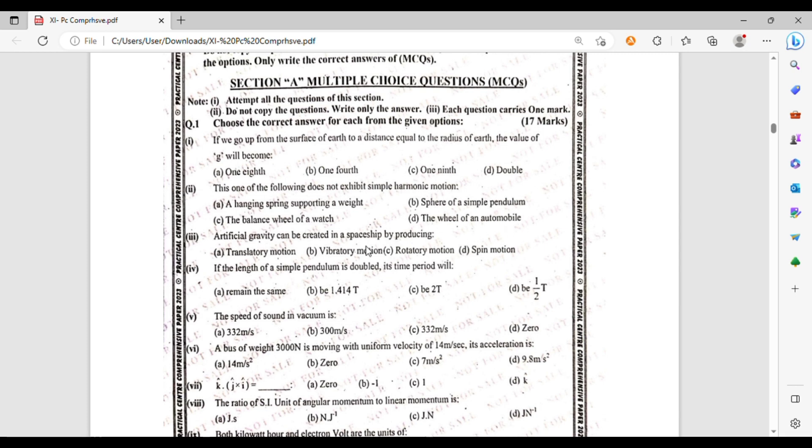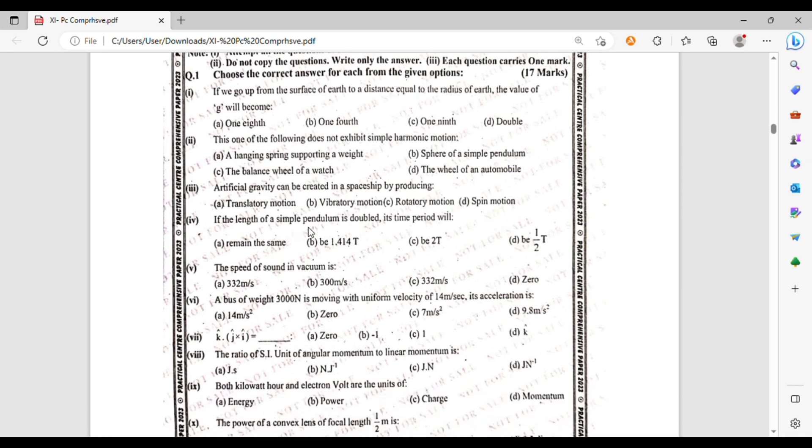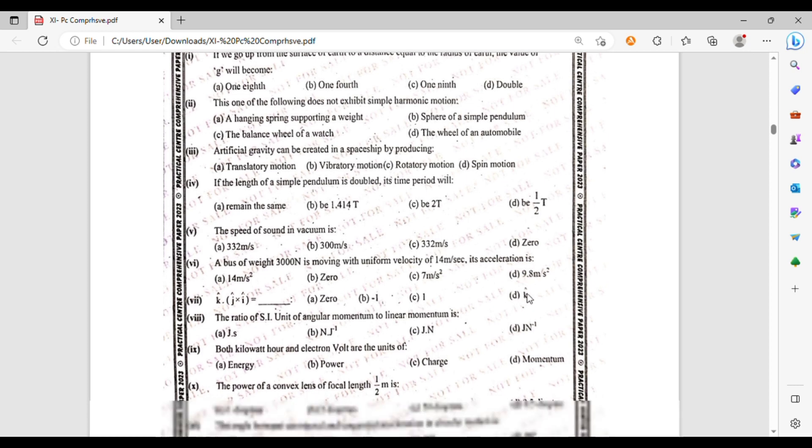Artificial gravity can be created in a spaceship by producing translatory motion, vibratory motion, rotational motion, or spin motion. If the length of a pendulum is doubled, the time period will remain the same, be 1.414 times, 2 times, or 1 upon 2 T. The speed of sound in vacuum is 332 meter per second, 300 meter per second, 332 meter per second, or zero.